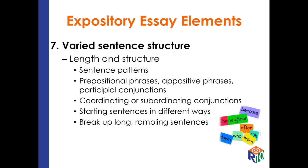Sentences are the building blocks of writing, and the way sentences are constructed affects the fluency or the flow of the writing. Expository essays are enhanced when the writer uses purposeful sentences that are varied in both length and structure. Examples of how writers can vary sentences include using a variety of sentence patterns including simple, compound, and complex sentences; combining short sentences with prepositional phrases, appositive phrases, or participial phrases; combining short sentences by linking items of equal importance with a coordinating conjunction; and combining sentences containing ideas of unequal importance with a subordinating conjunction.